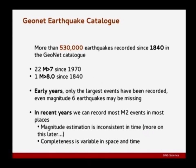The completeness of the catalog — how well we actually record magnitudes — is highly variable around the country and particularly in time, rapidly increasing as you go back in the catalog. The catalog is quite a tricky thing to deal with. Magnitude estimation is also inconsistent in time. Magnitude is essentially a model; there are lots of different ways you can estimate it, there's no true magnitude, and that causes all kinds of interesting challenges.